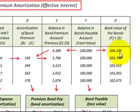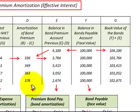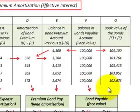As the bond premium is amortized each period, the book value of the bond also decreases. We reduce this book value down to its face value when it becomes payable. So in the last period, the bonds payable account would be $100,000 and the book value of the bond would also be $100,000.